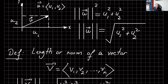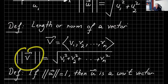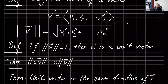That was just in R2 so you could visualize how it works. But in general, in Rn, if you have a vector v with components v1 through vn, the norm of v is the square root of v1 squared plus v2 squared, dot dot dot, plus vn squared. If the norm of a vector is one, then it is called a unit vector.